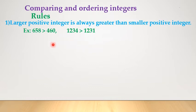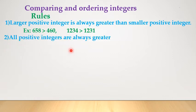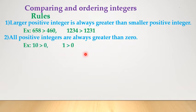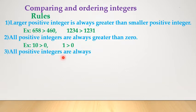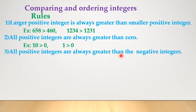Rule 2: all positive integers are always greater than 0. For example, 10 is greater than 0, and 1 is also greater than 0. Rule 3: all positive integers are always greater than negative integers. For example, 10 is greater than minus 15, and 2 is greater than minus 50.